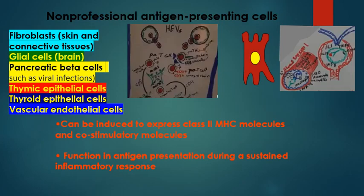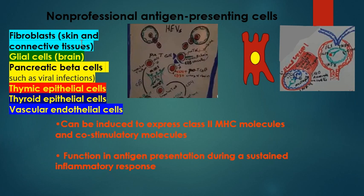While any cell in the body can act as an antigen presenting cell, the professional antigen presenting cells are only B-cells, dendritic cells, and macrophages. Under abnormal conditions such as trauma or infection, other cells act as non-professional antigen presenting cells — for example, fibroblasts in the skin, connective tissue, or tendons, which can present antigens to aid in healing, though this may sometimes trigger inflammation.